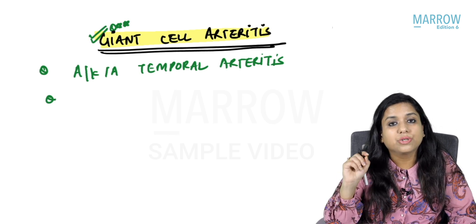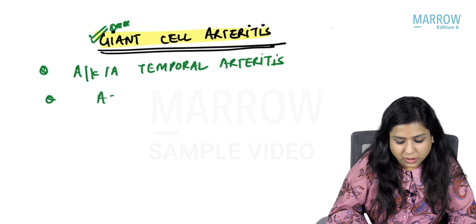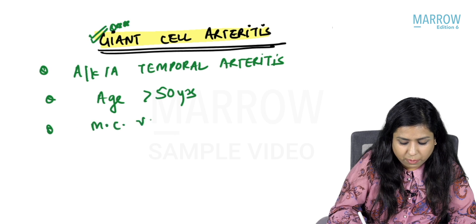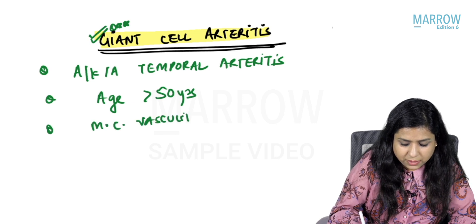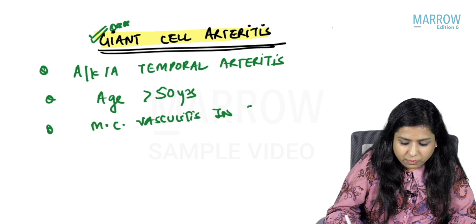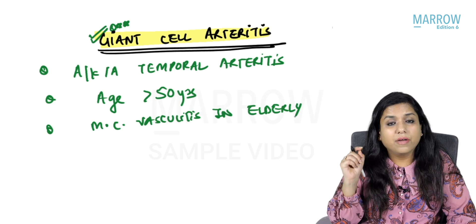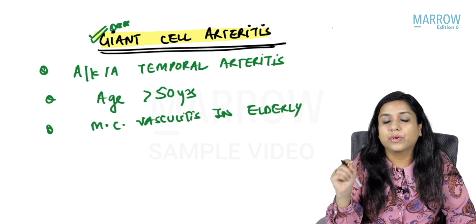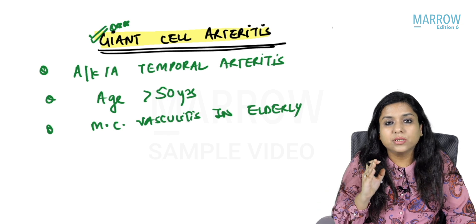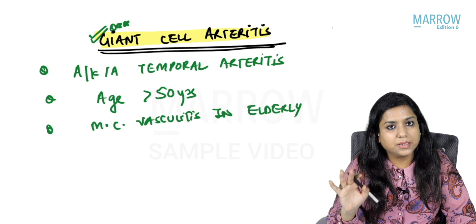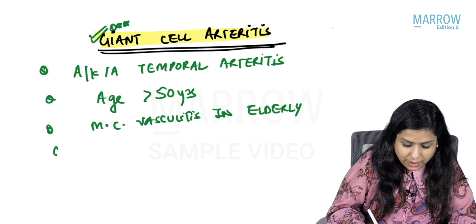Giant cell arteritis is the most common vasculitis in adults or elderly. If the patient's age is less than 50 years, you do not make a diagnosis of giant cell arteritis.